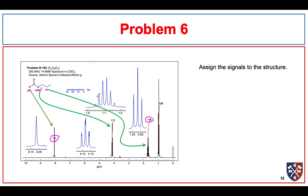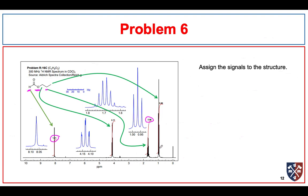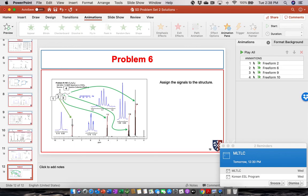We only have one assignment left. It's a CH3 group next to a CH2 group, so we expect it way down at 1 ppm and it should be a triplet — and indeed, this is also consistent. There we go, that's it.